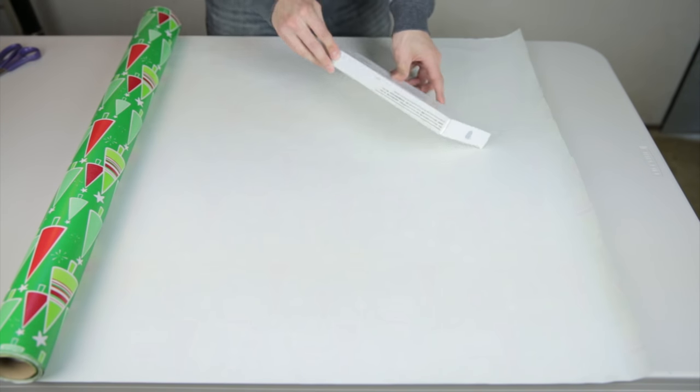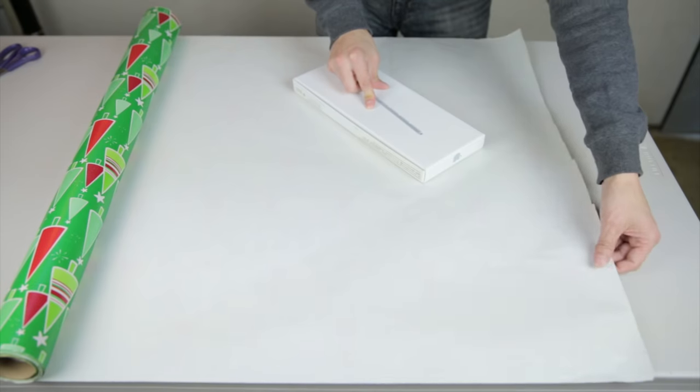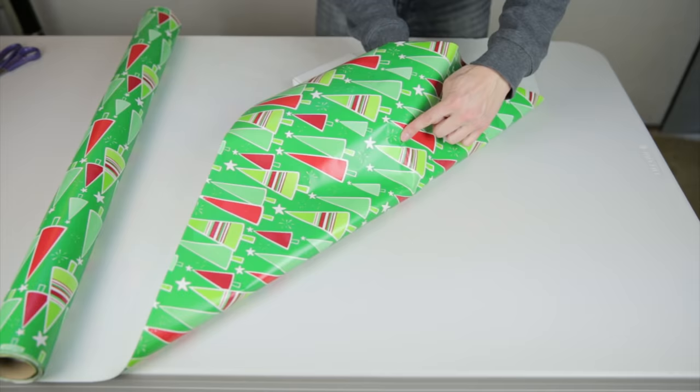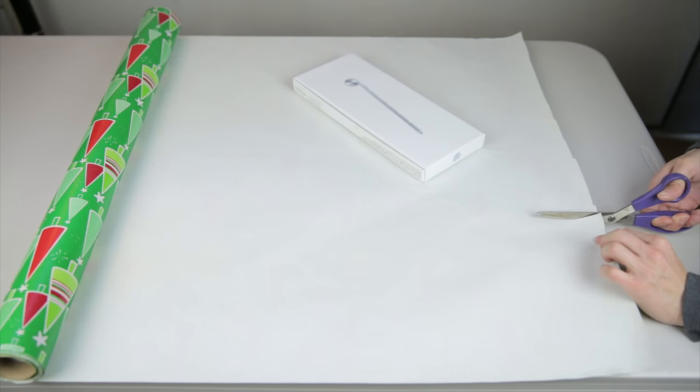Then roll your gift forward twice, making sure not to move the gift. Fold the paper over your present this way, and make a mental note of about 2 inches into the gift over here, and then give it a cut.